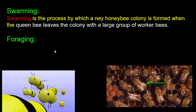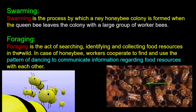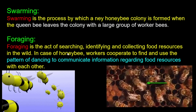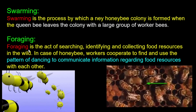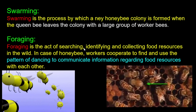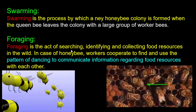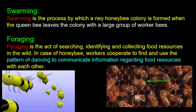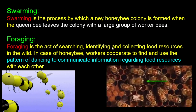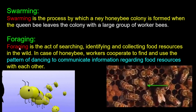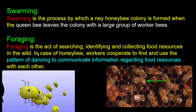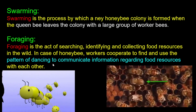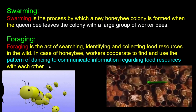Next is foraging. Foraging is the act of searching, identifying, and collecting food resources in the wild. Food material is the source of foraging. Workers cooperate to find food and use a pattern of dancing to communicate information regarding food resources with each other.